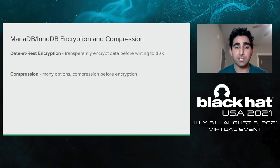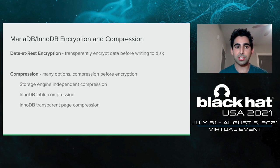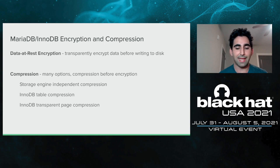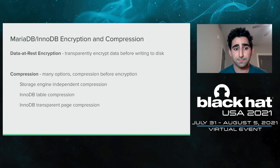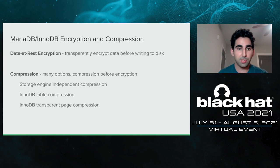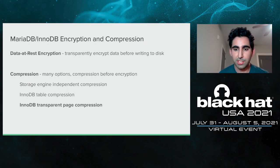MariaDB also offers many options for compression, which always happens before encryption. One is called storage engine independent compression, a MariaDB feature that compresses the contents of each cell within a table — good for large strings or blobs, but it doesn't compress between different rows or columns. Then there are InnoDB's compression features: table compression and transparent page compression. I'm going to focus on transparent page compression because it's the more recent one, has performance benefits, is simpler, and is the one we use in our attack.